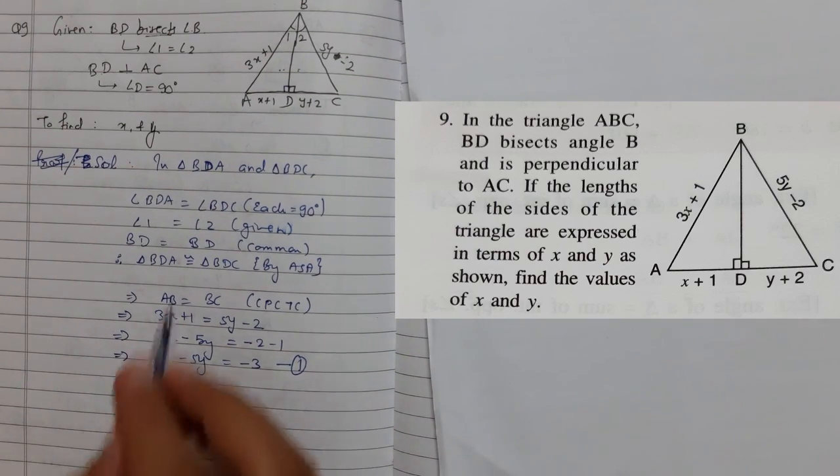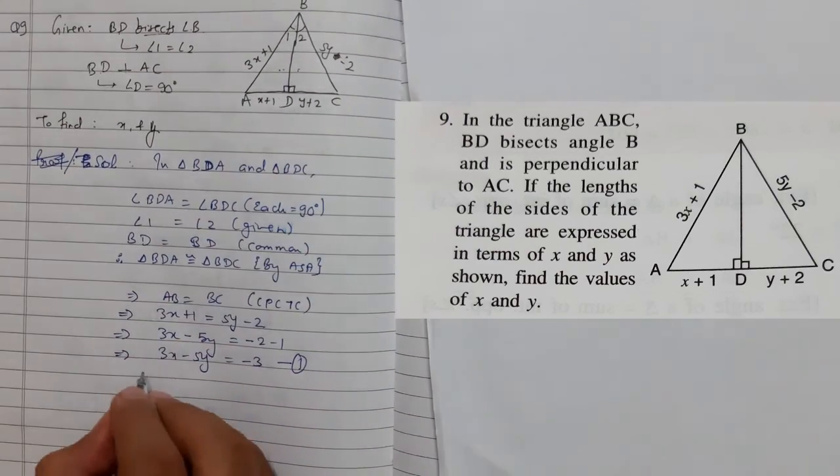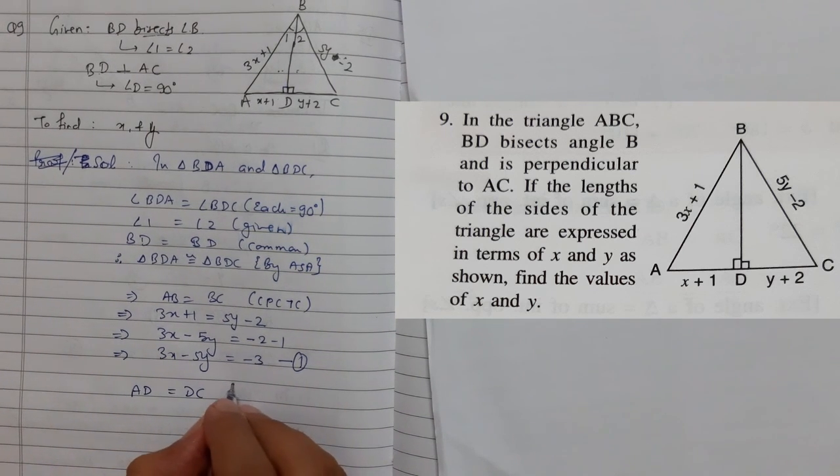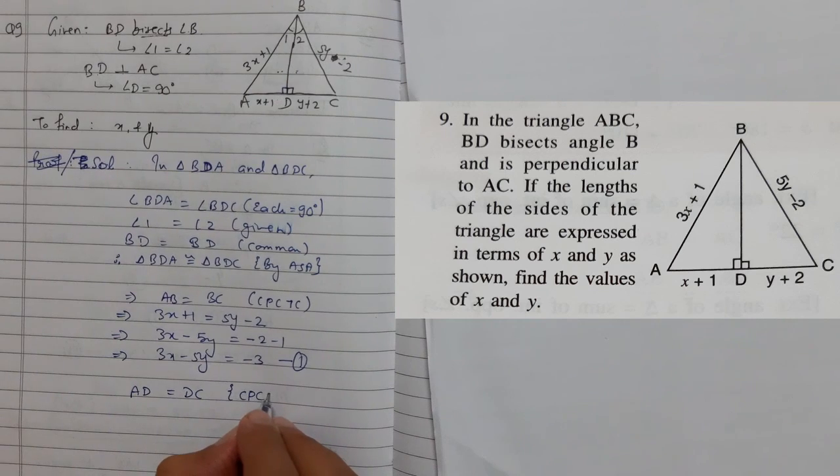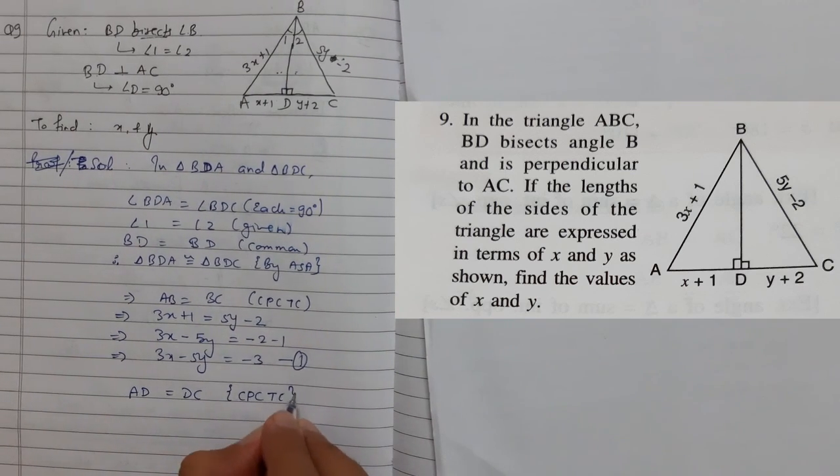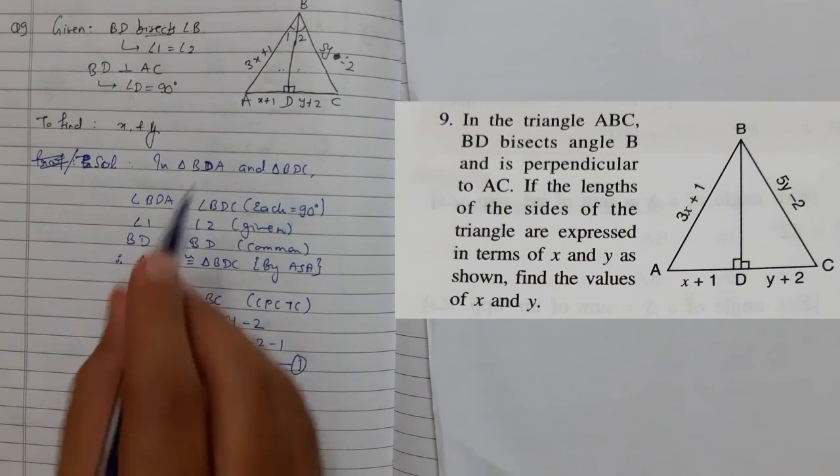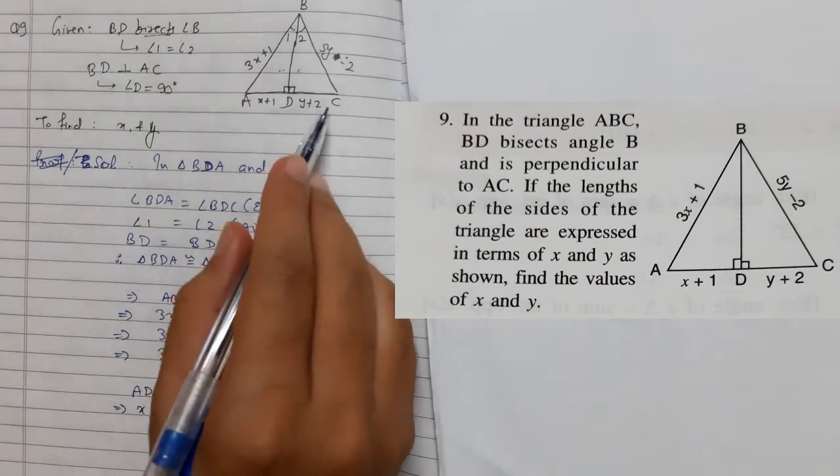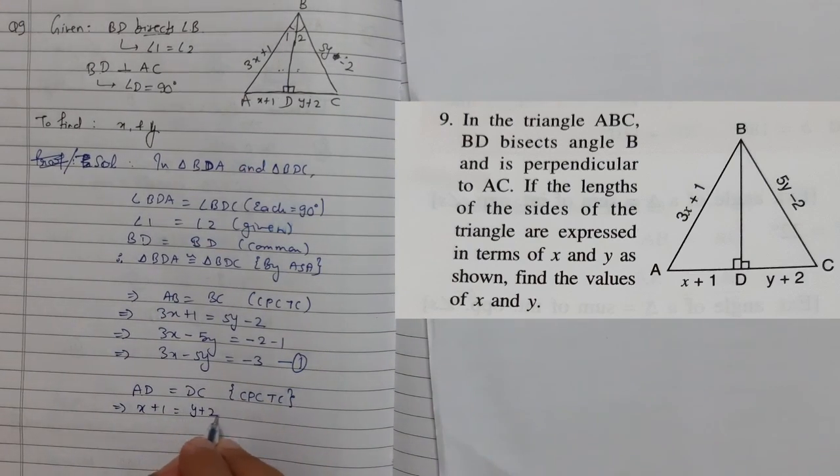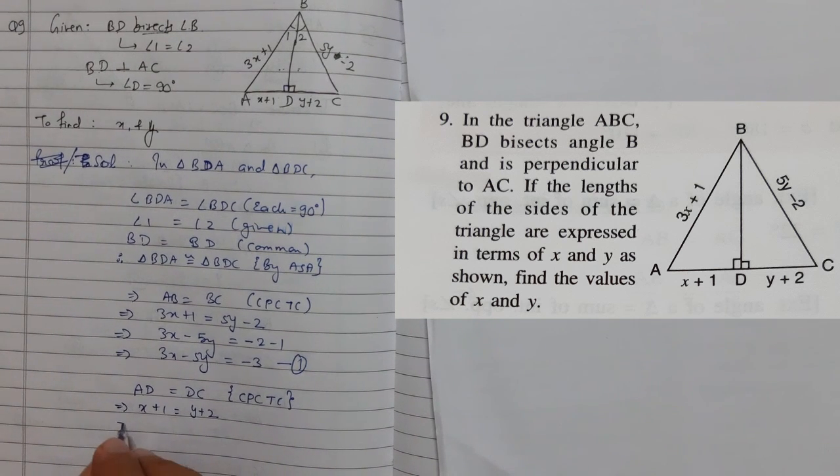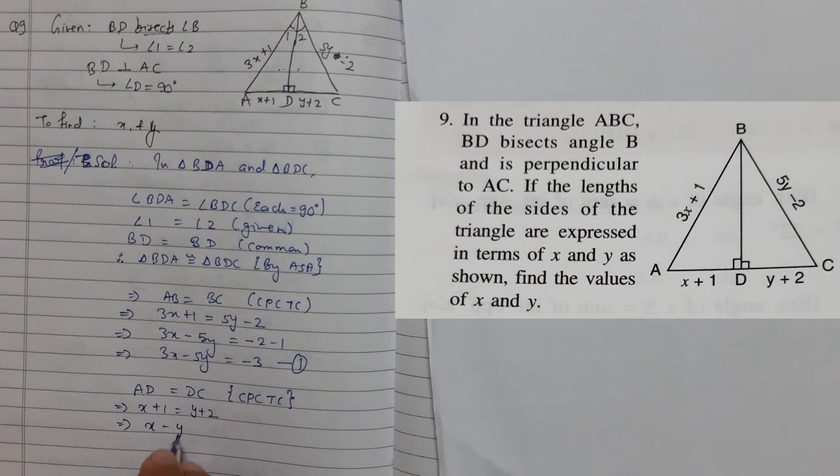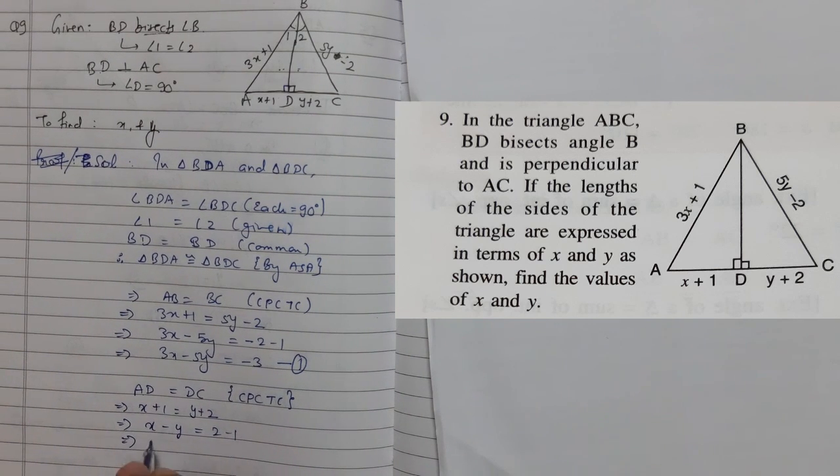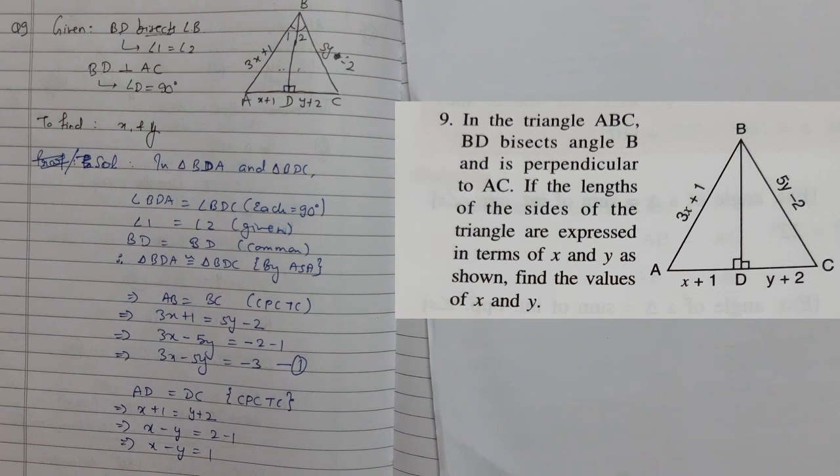Similarly, I can say AD equals DC, again by CPCT. So what is AD? AD is x plus 1, and DC is y plus 2. We got one more equation: x minus y equals 1.